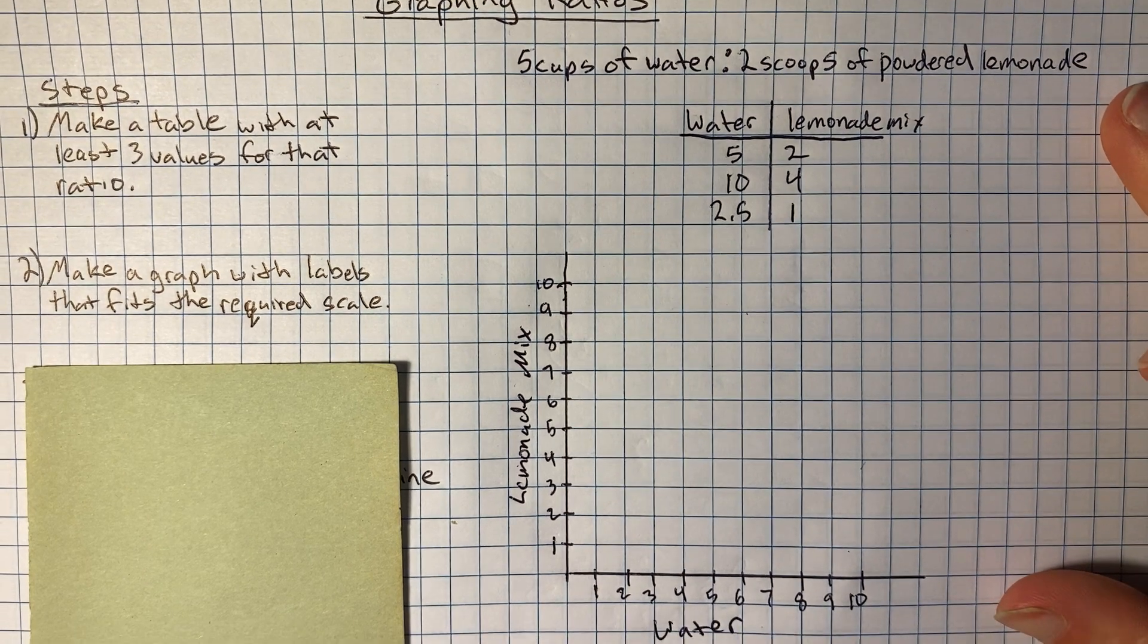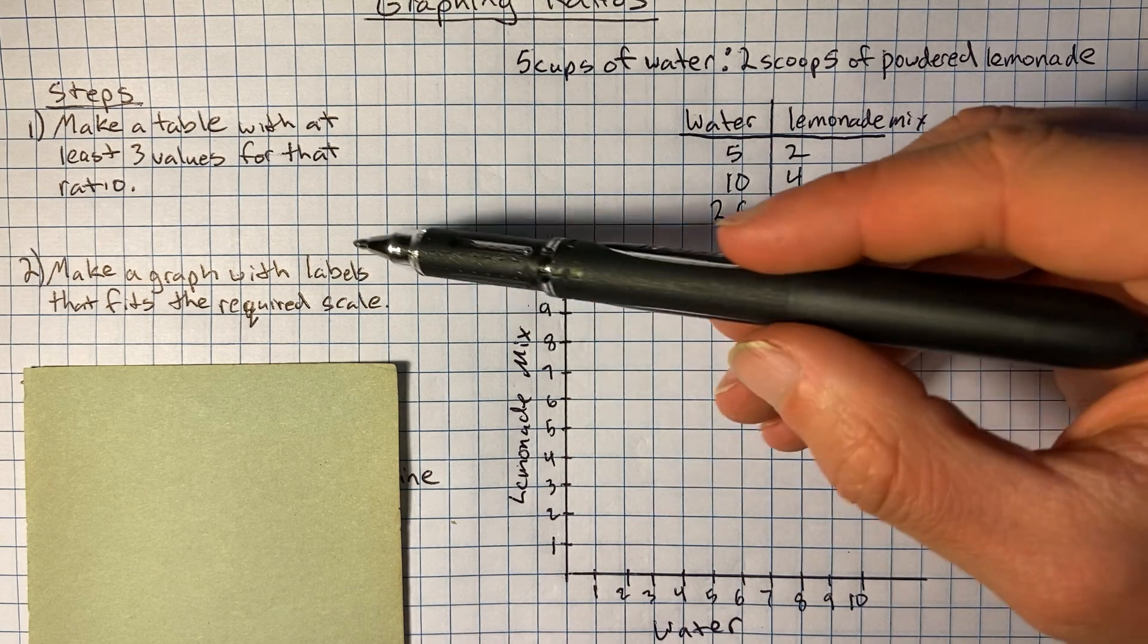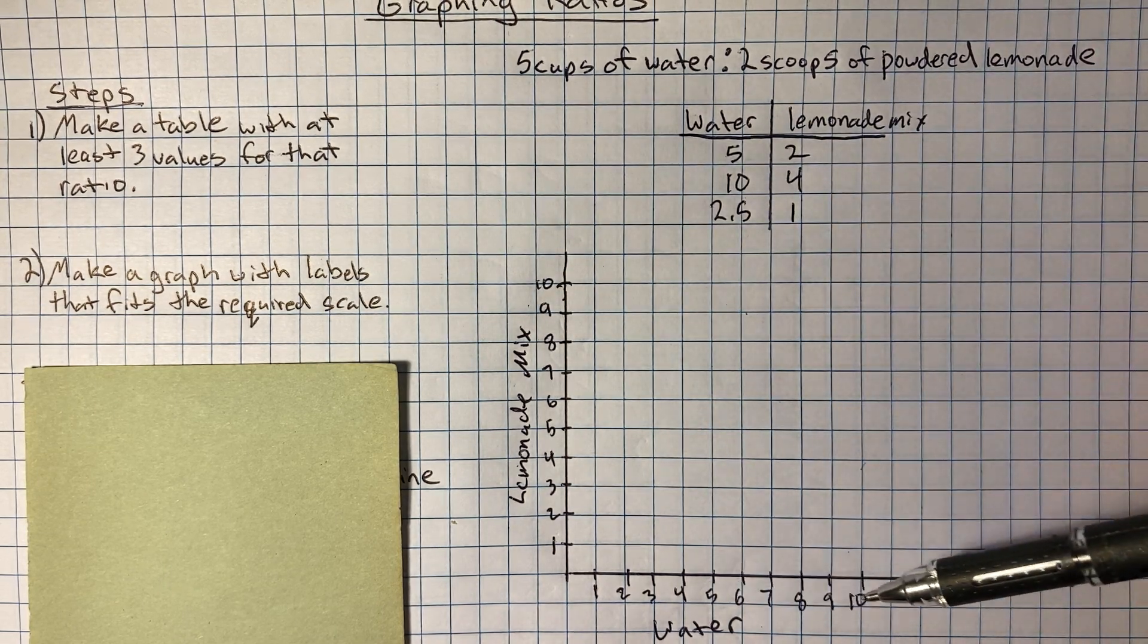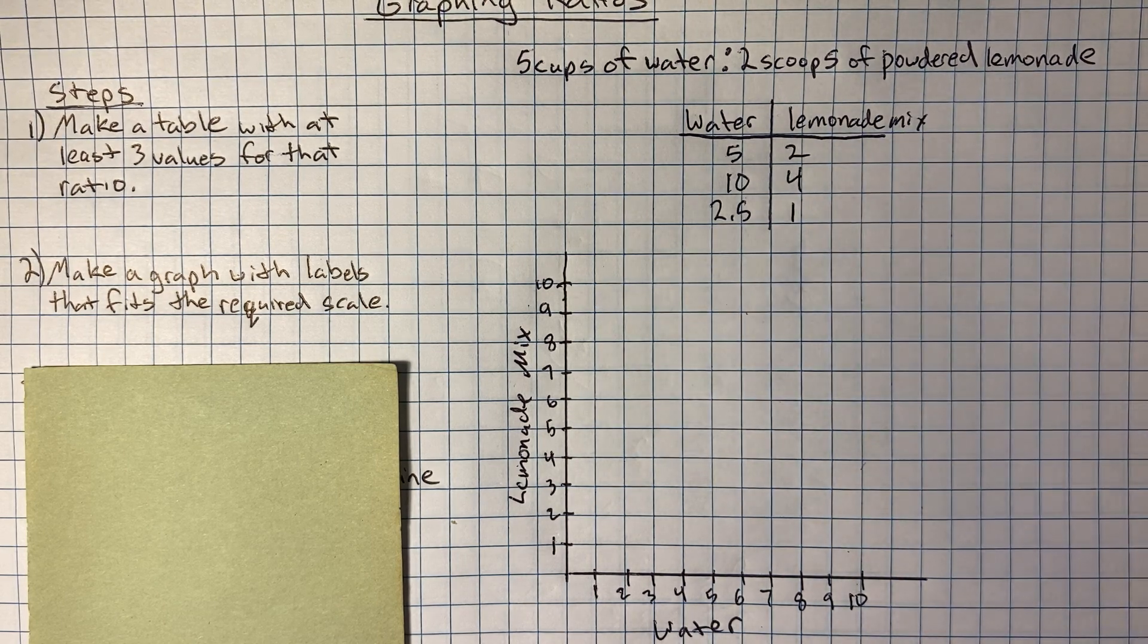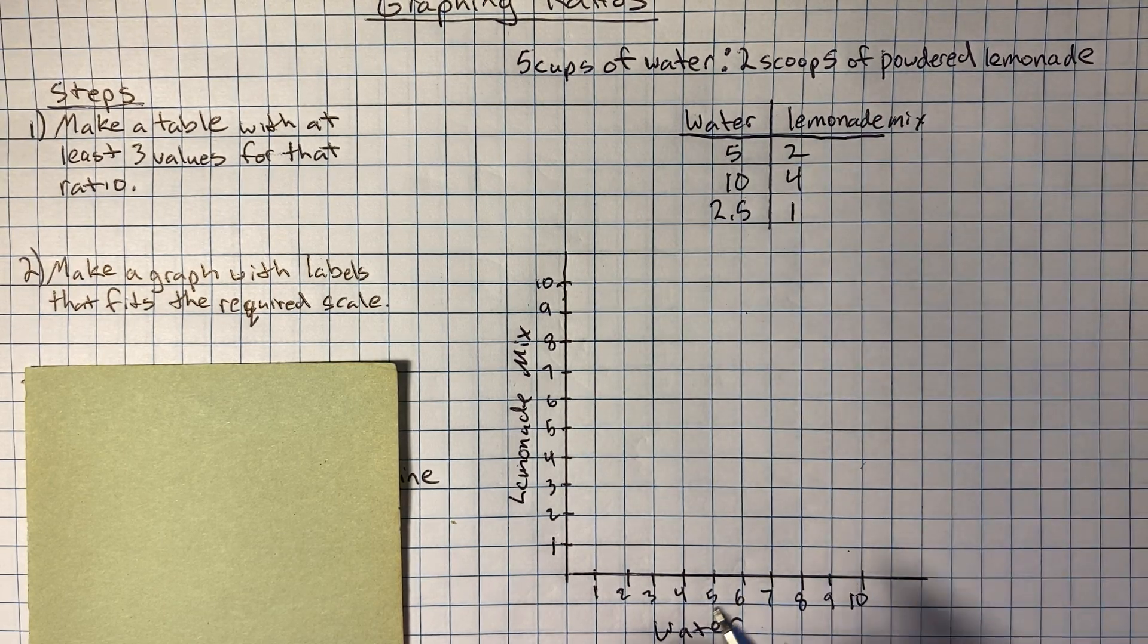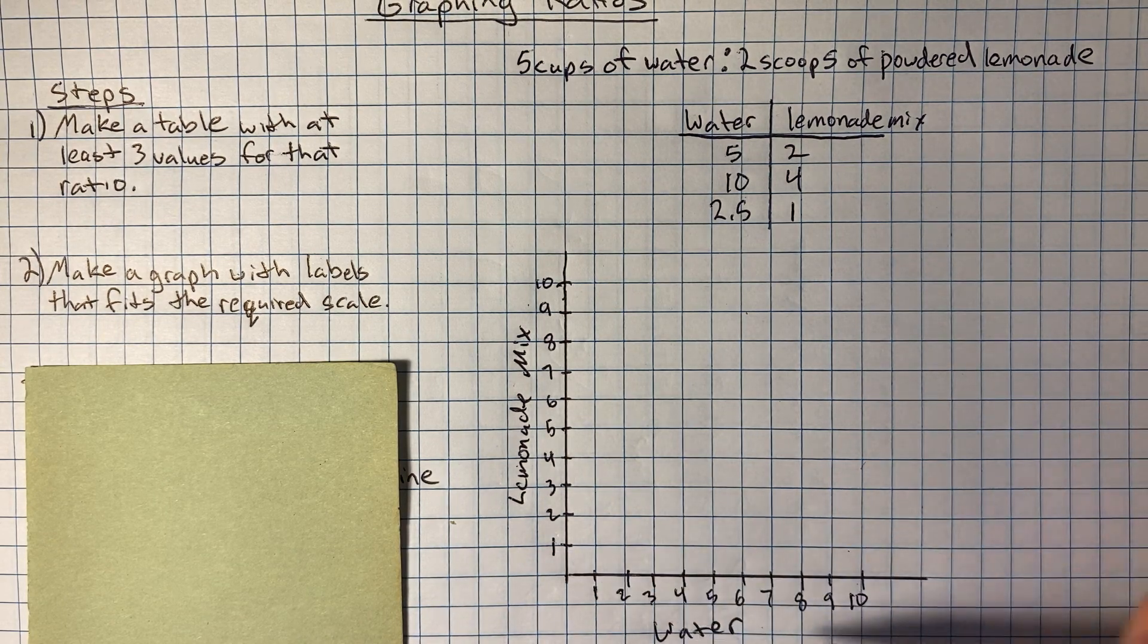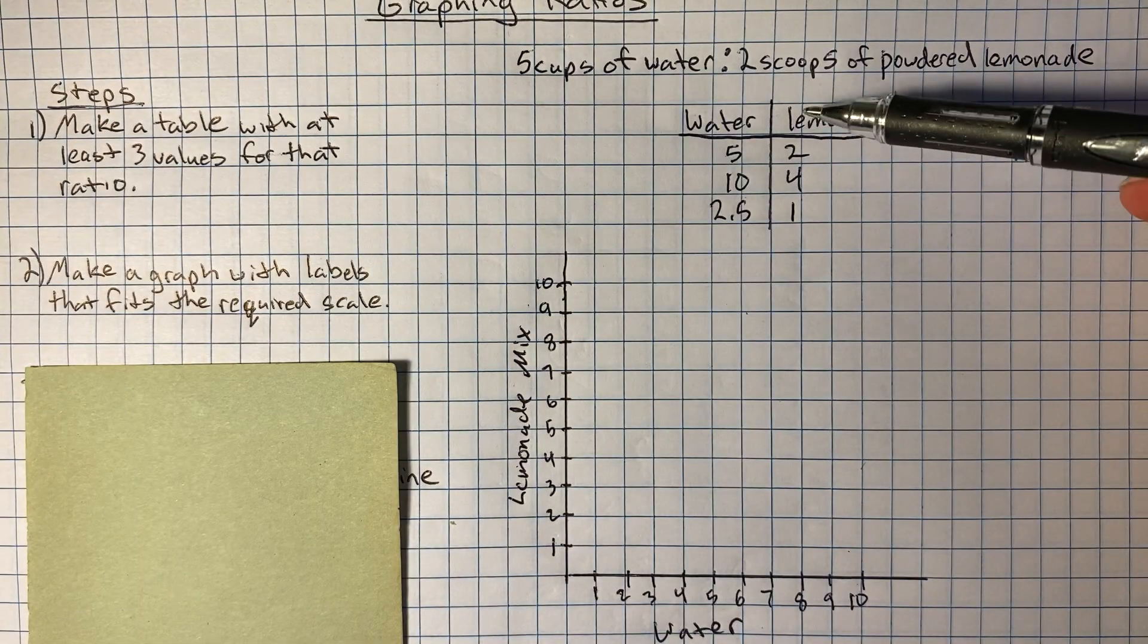Sorry, it's a little sloppy. So I labeled, I made a graph, and I labeled it. I want to make sure it fits the required scale. So we see the water, the biggest number I need for water is 10. My graph goes to 10. For lemonade mix, 4. I definitely make it there. If I had something that was much bigger, I might even want to count by a different scale. So if I had to go to 100, I might do like count by 10s or something like that. So I have my graph, the scale.